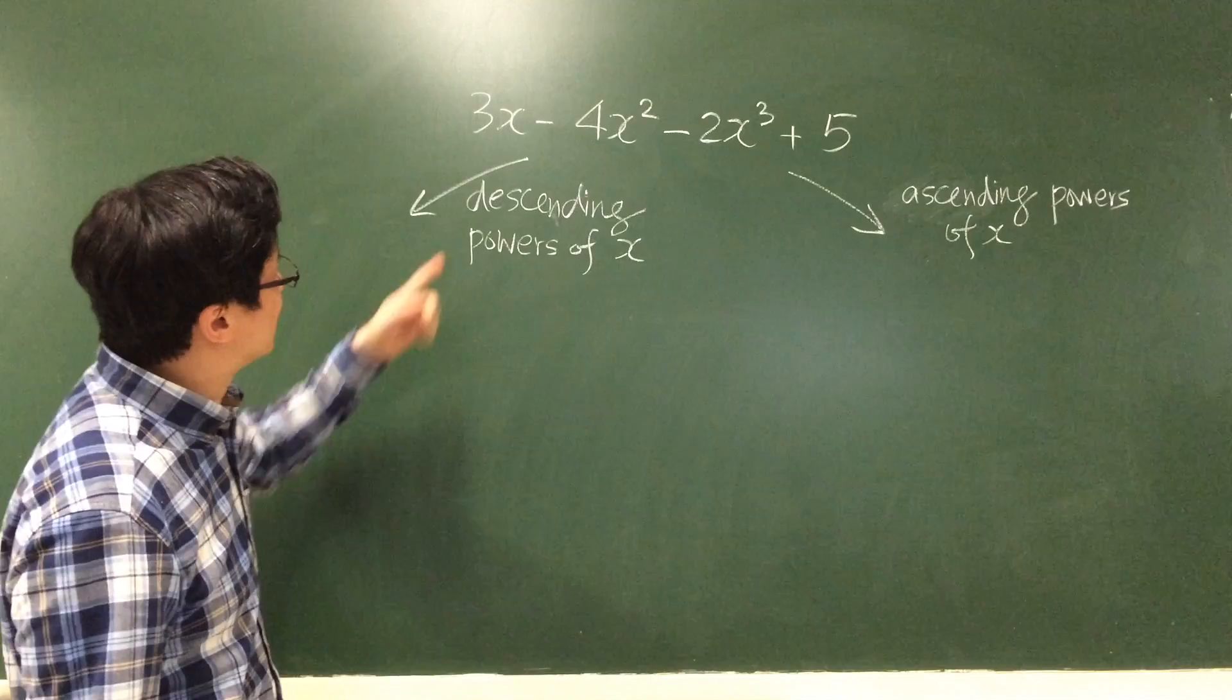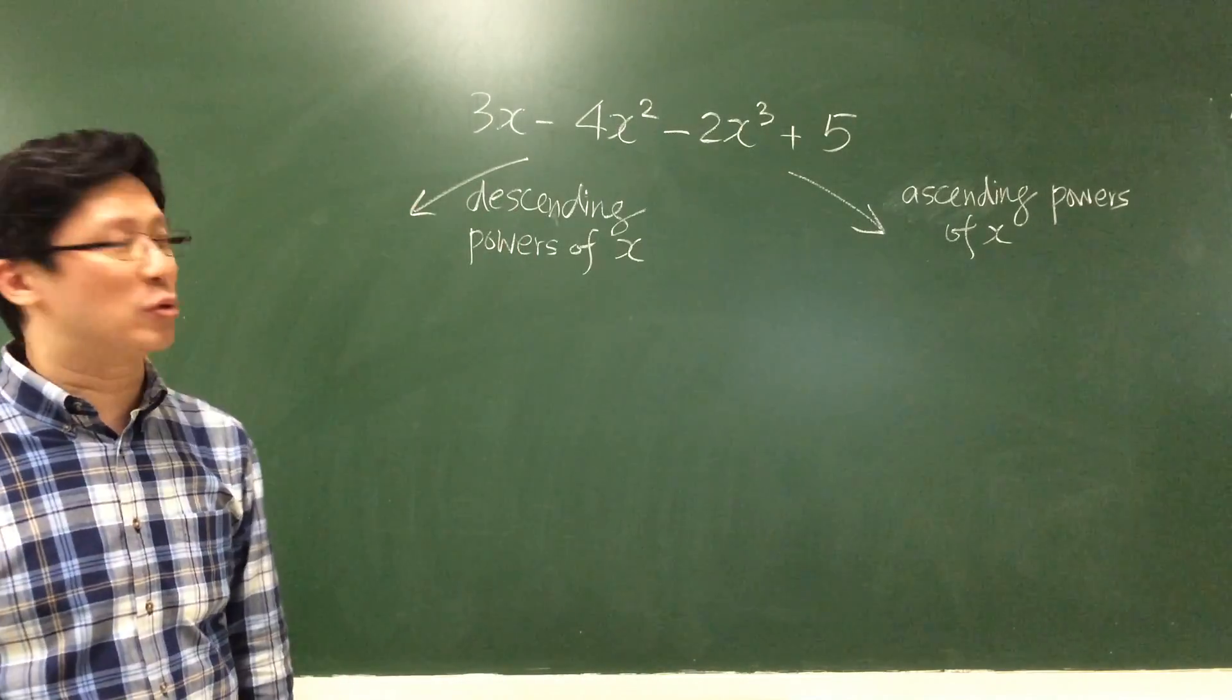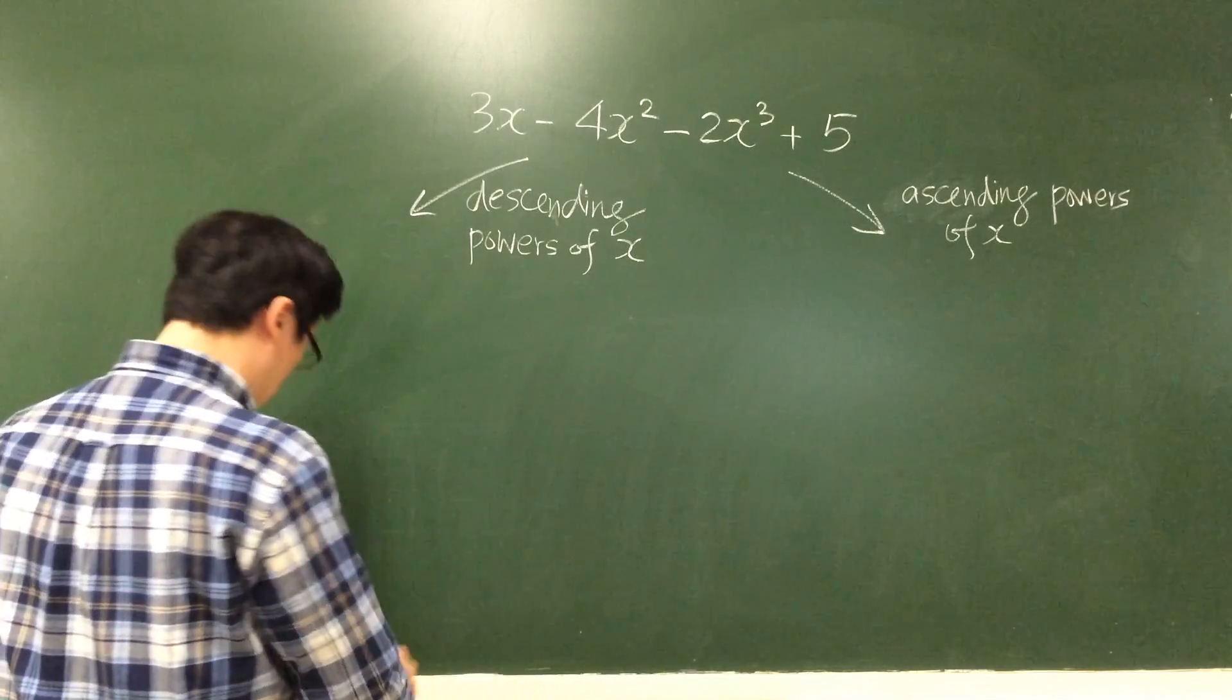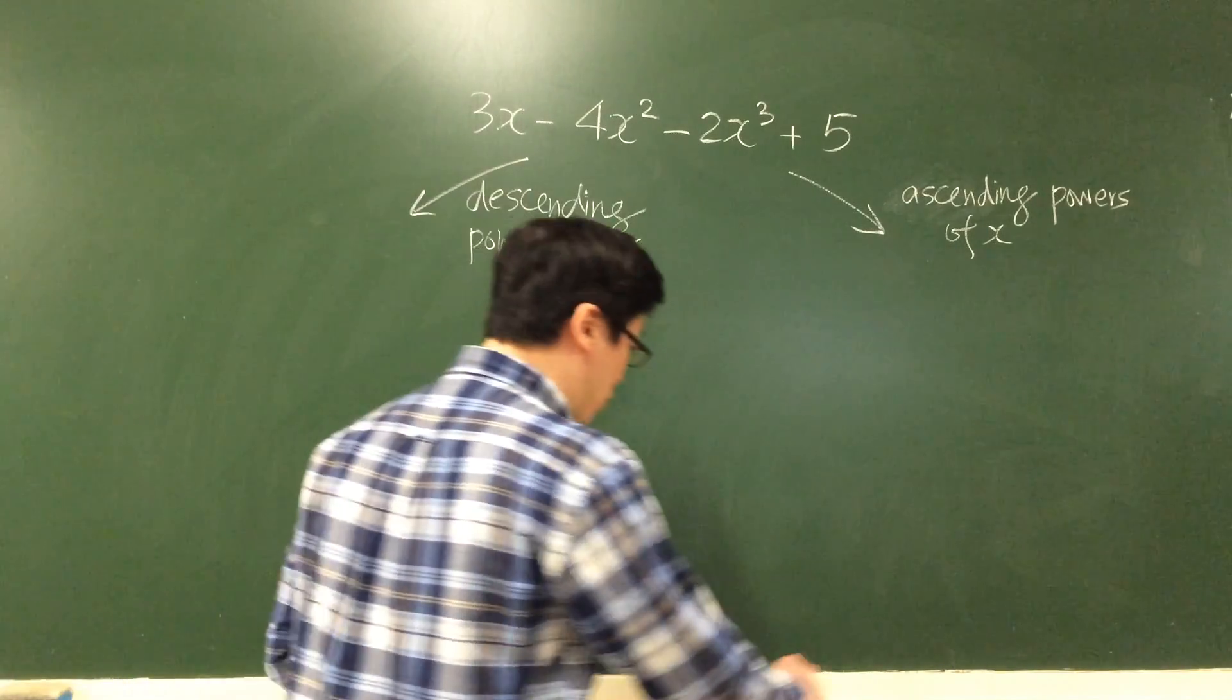Descending means from big to small in terms of the powers of x. So we can identify the terms in the expression.